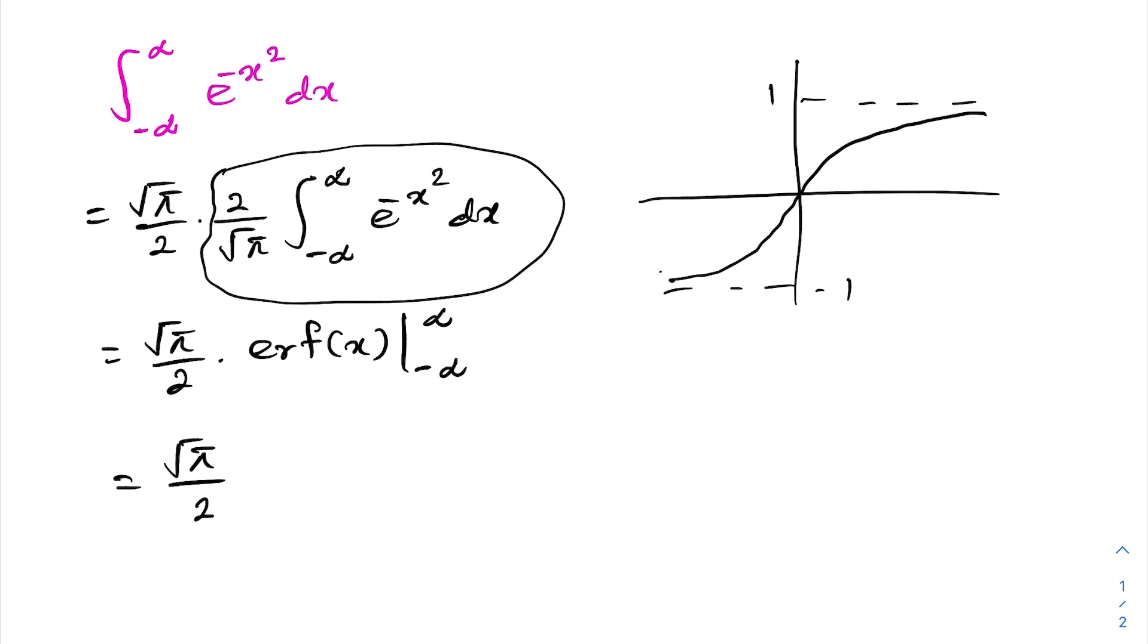When x approaches to infinity, we know erf of x is equal to 1, then minus. When x approaches to minus infinity, we have minus 1.